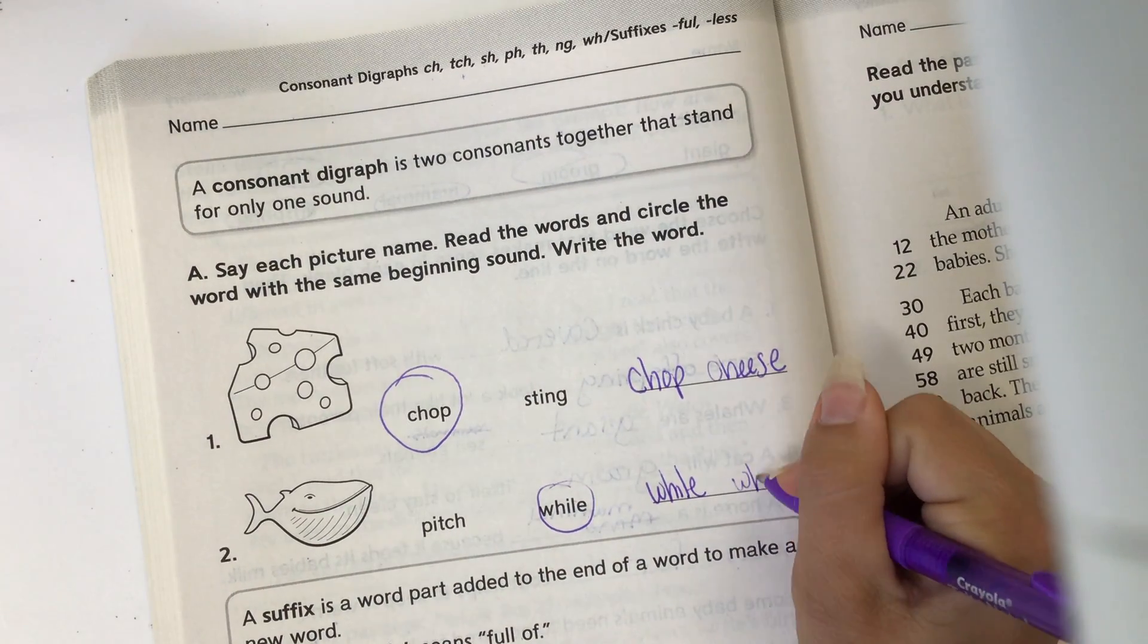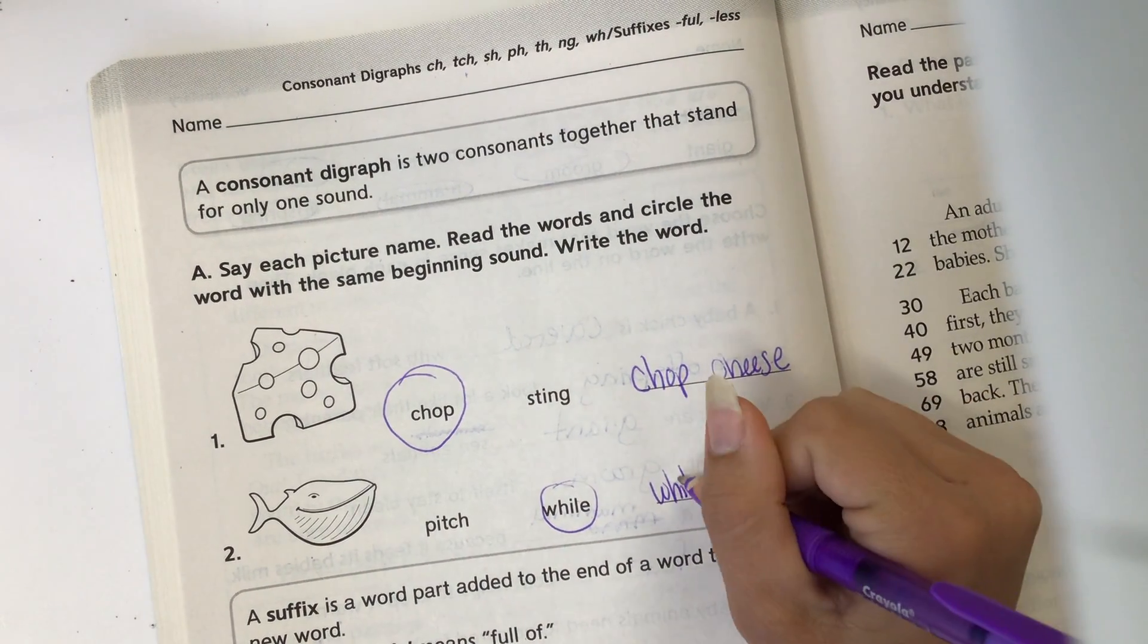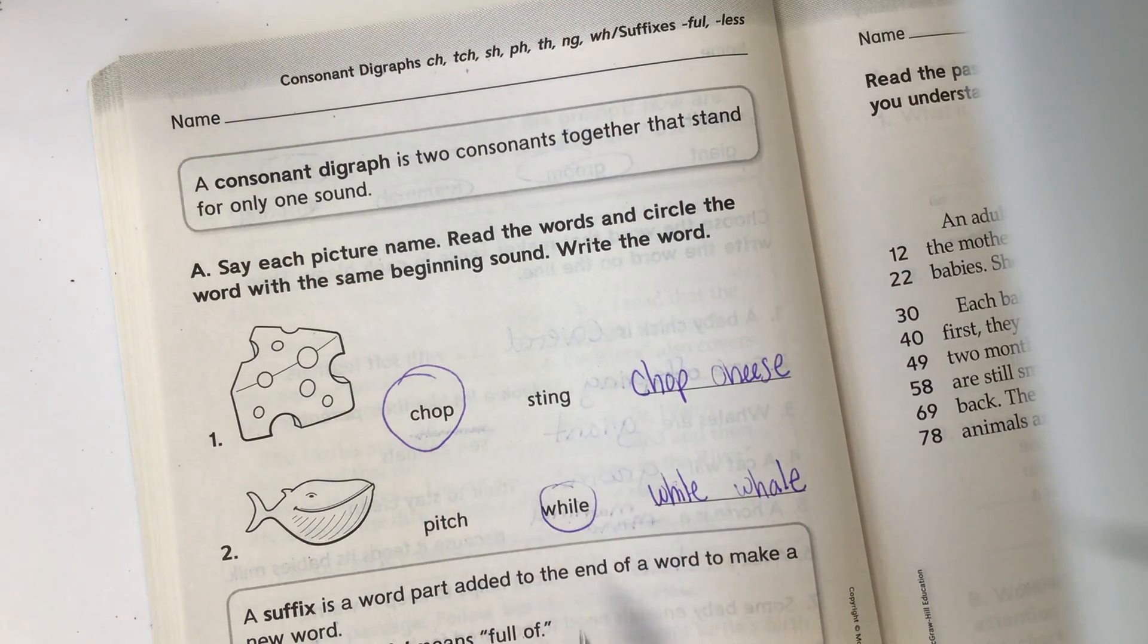And I'm also going to write whale, which is actually spelled almost the same as while. Just change that I to an A and you have the word whale.